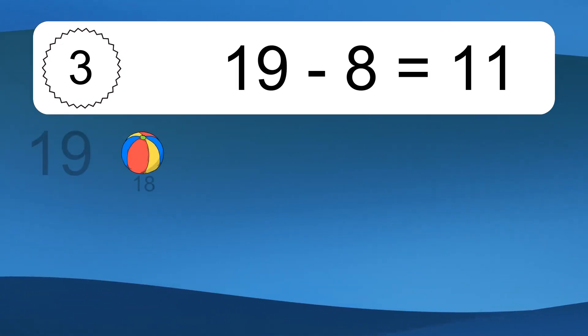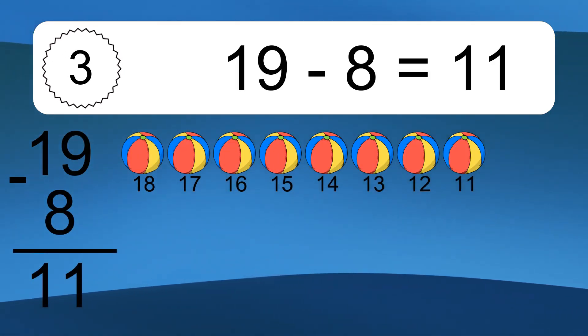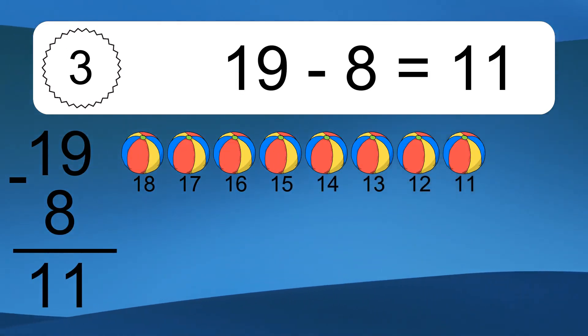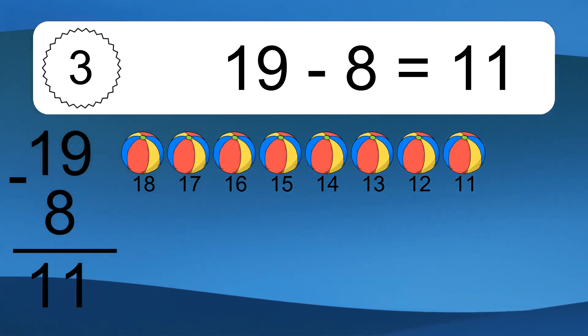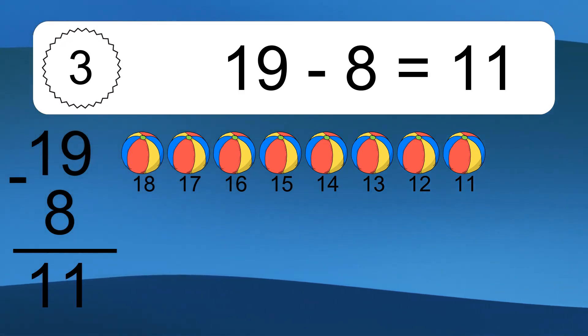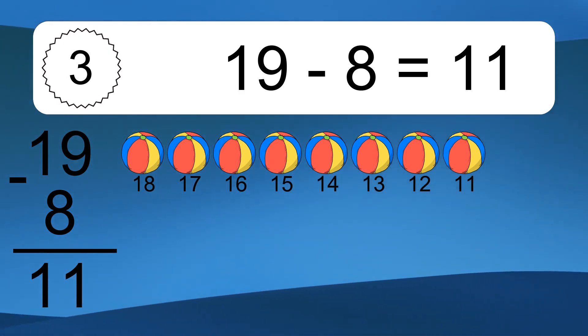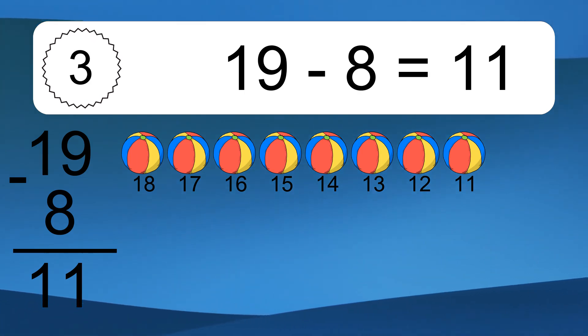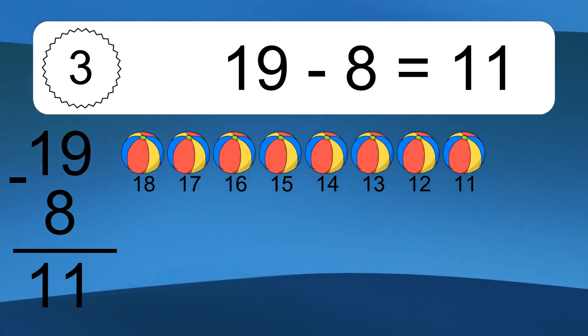19 minus 8 equals what? 19 minus 8 equals 11. Let's count it. 18, 17, 16, 15, 14, 13, 12, 11.